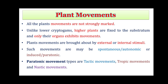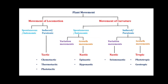Such organs may be roots, stem, leaves, flower, etc. Plant movements are brought about by a stimulus, which may be external or internal. Such movements are of two types: spontaneous or autonomic, and another type is the induced or paratonic type of movements. The paratonic type movements are of three types: tactic movements, tropic movements, and nastic movements.